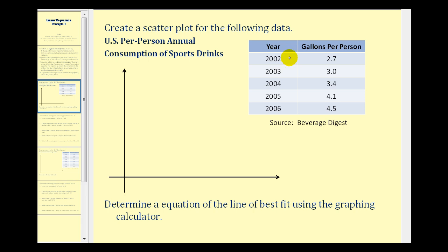So we'll use zero for 2002, one for 2003, two for 2004, three for 2005, and four for 2006. So the first point that we'll plot will be zero, two point seven. The second point will be one, three, and so on.